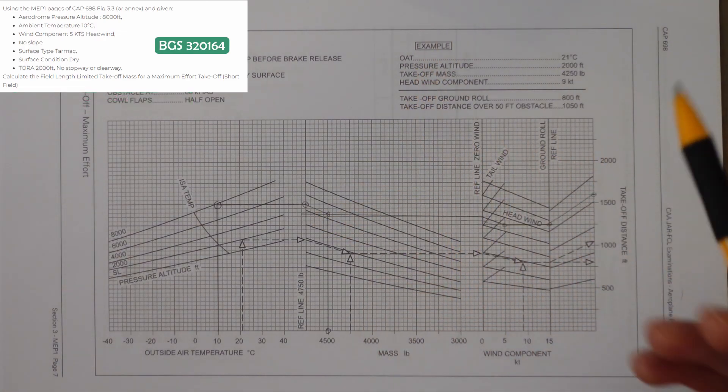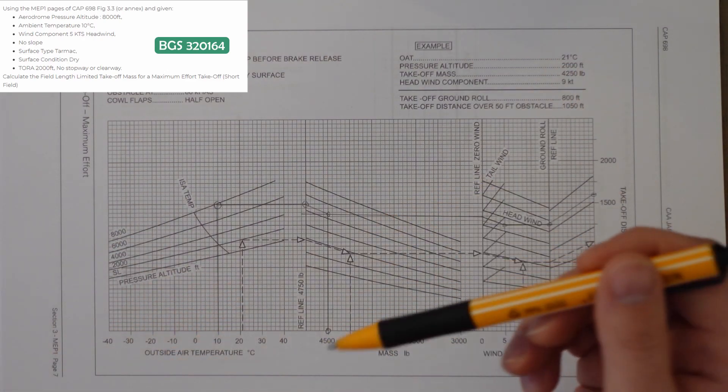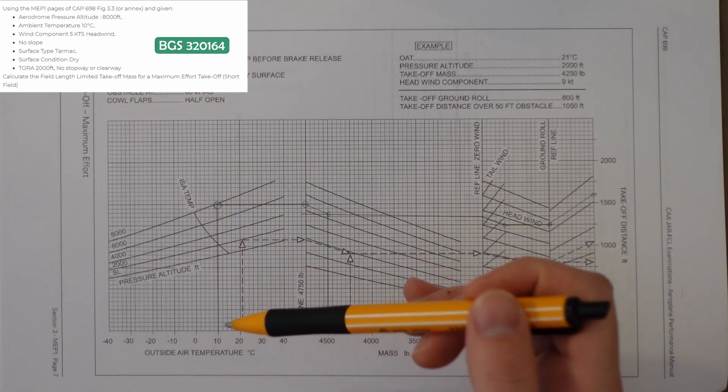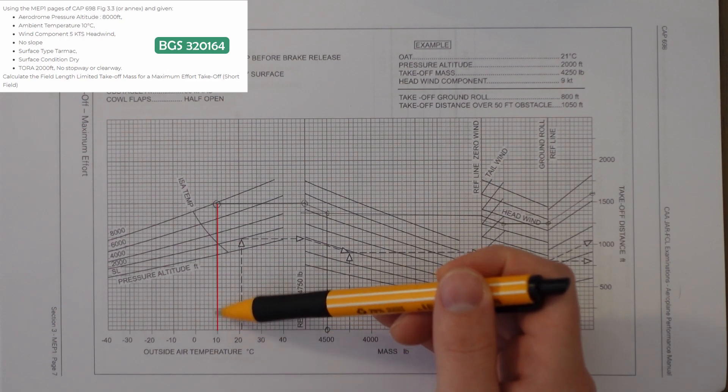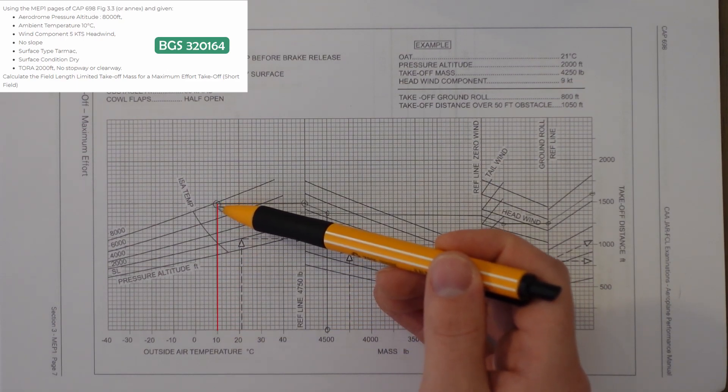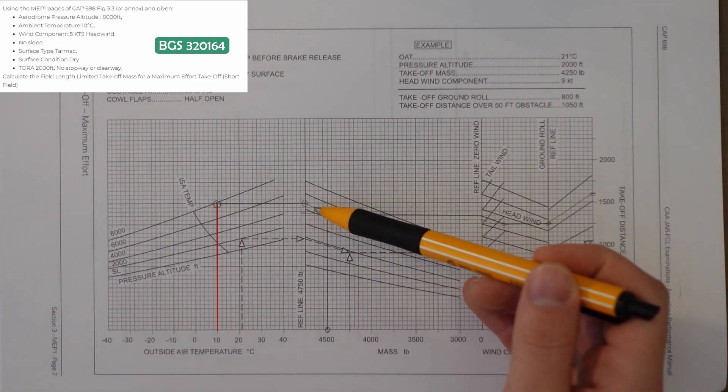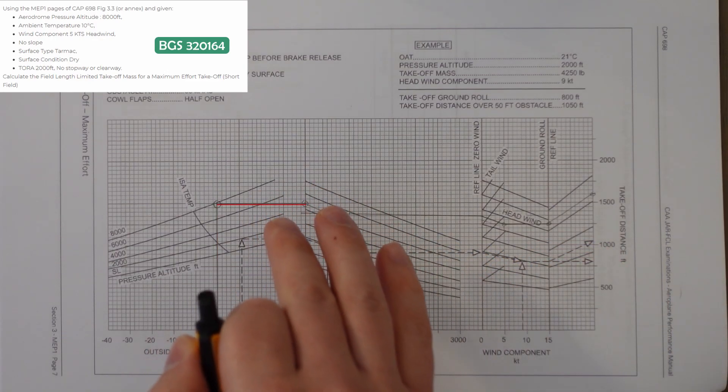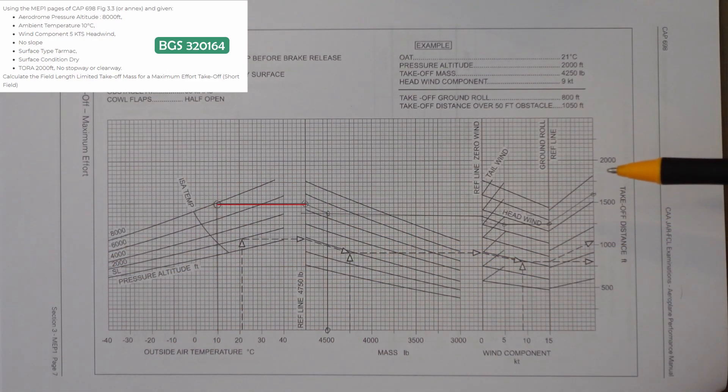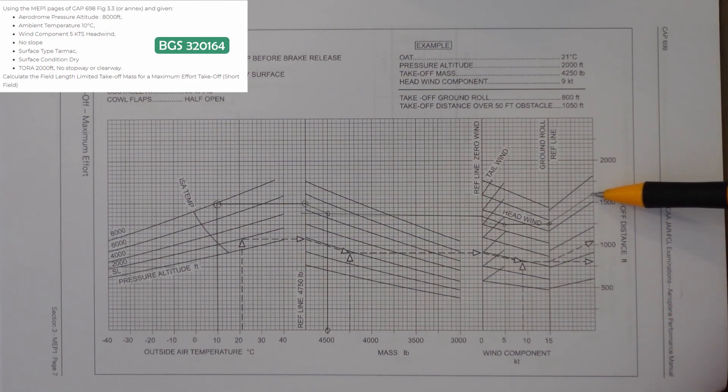The first thing I do, I always like to start left to right. So I'm going with the temperature and the pressure altitude. It was 10 degrees and we go up to the 8,000 feet pressure altitude and then it's straight across to the reference line. At that point I would stop, come back. And I know that my takeoff distance requirement was 1,600 feet, which is this point here.